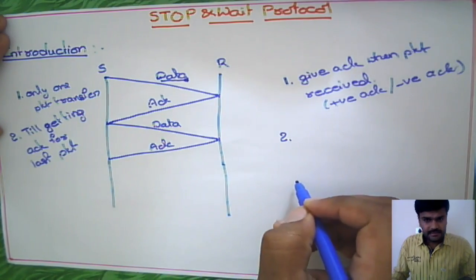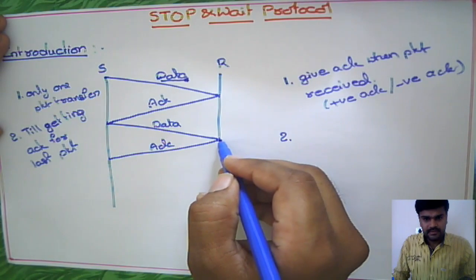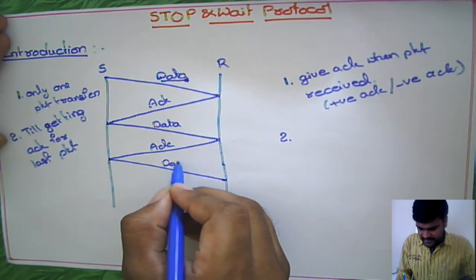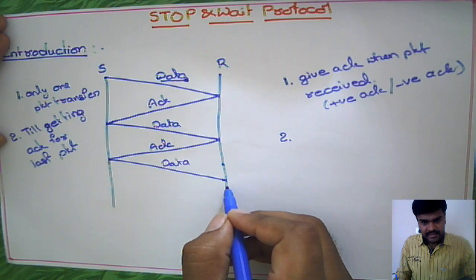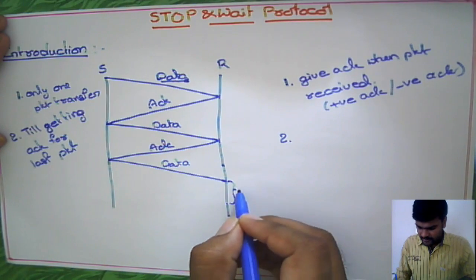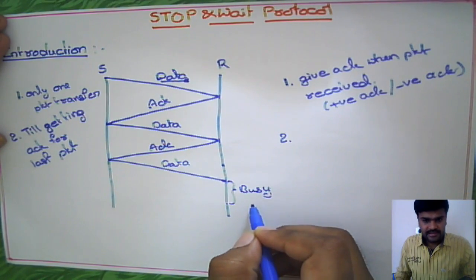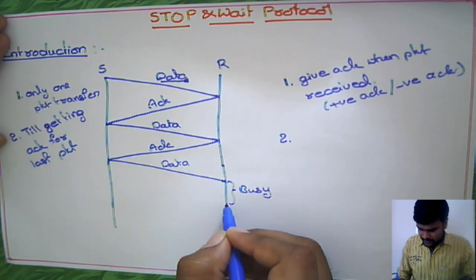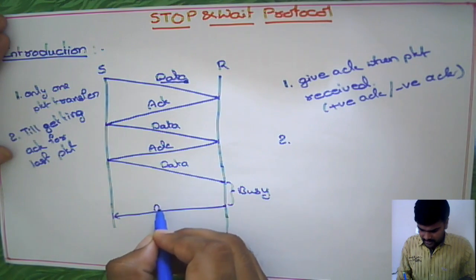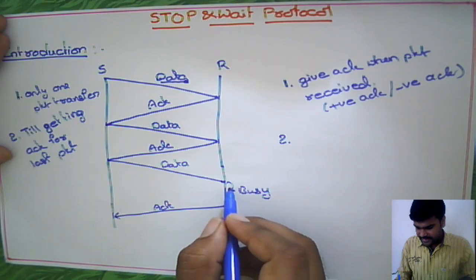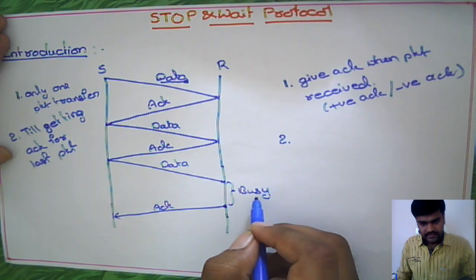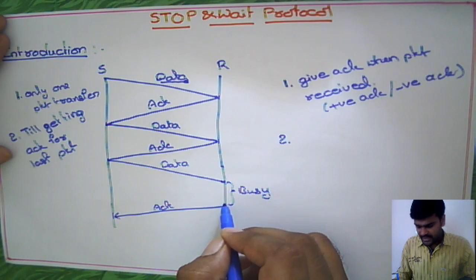The second point on the receiver side: when a packet arrives, suppose the receiver is busy at that time and is not in a position to give acknowledgement. The packet is kept in the buffer and no acknowledgement is given. After his work is over, he processes that packet and gives acknowledgement to the source.